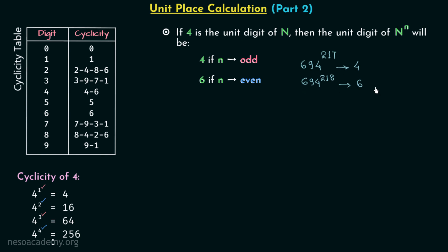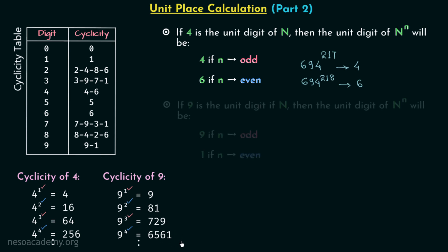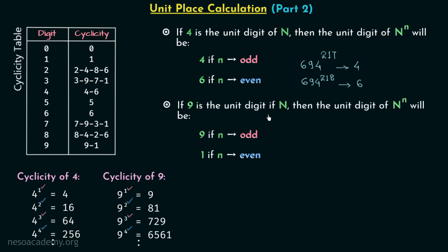Now we will move on to the cyclicity of digit nine. For the increasing powers of nine we have 9, 1, 9, 1, 9, 1, and so on at the unit place. When we have odd powers we will get nine as the unit digit, and when we have even powers we will get one as the unit digit. So we can say that if nine is the unit digit of number n, then the unit digit of n raised to power n will be nine if n is odd.